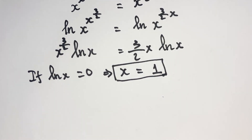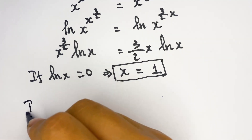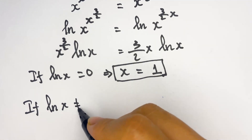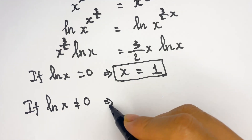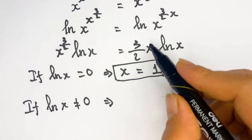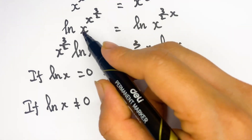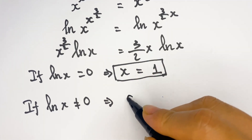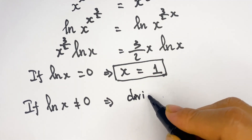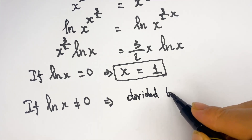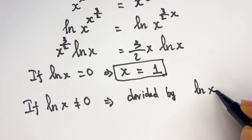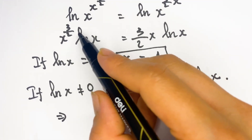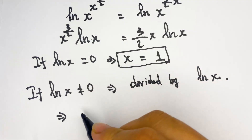And next, if natural ln(x) is not equal to zero, we can divide both sides by natural ln(x). Dividing both sides by ln(x) and cancelling it out.